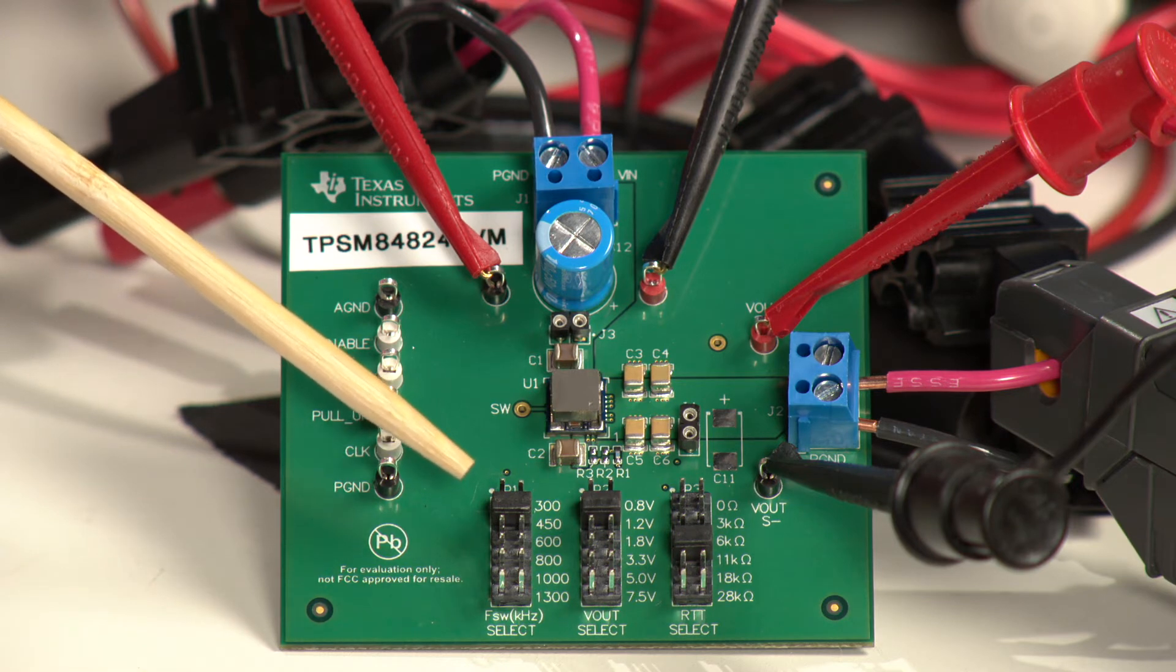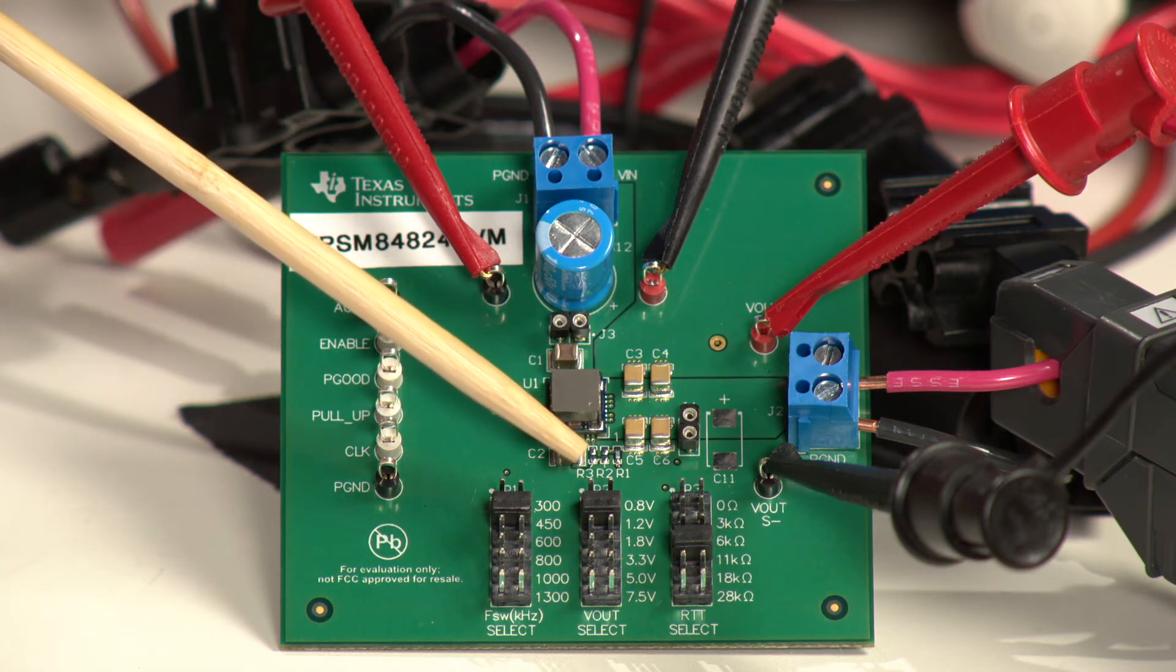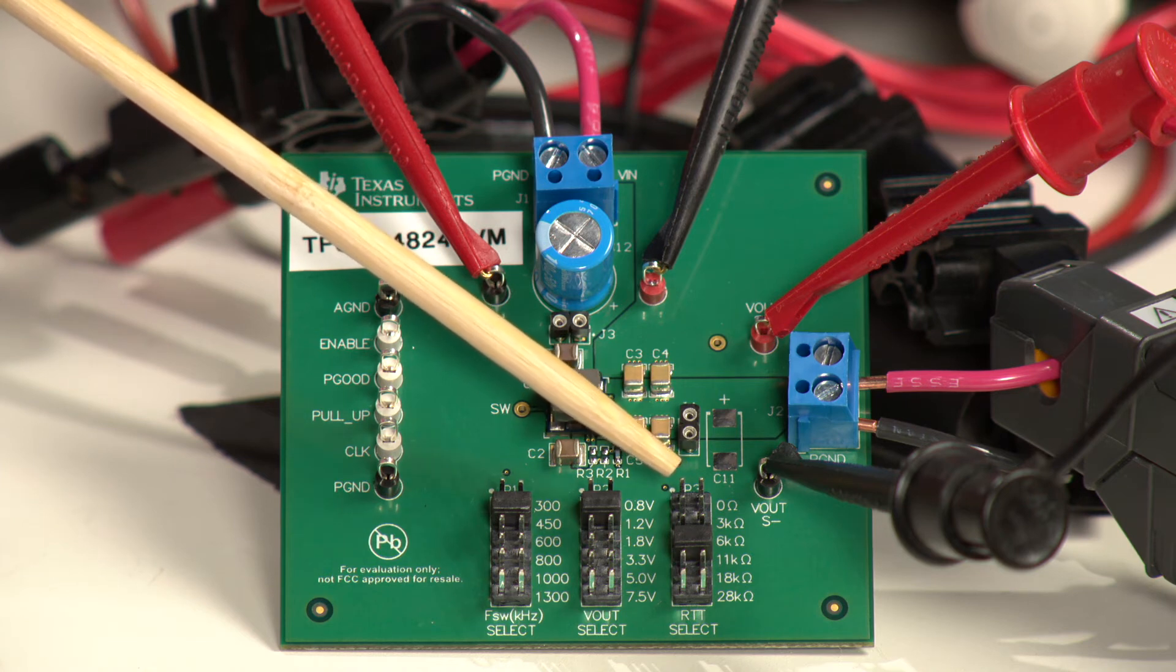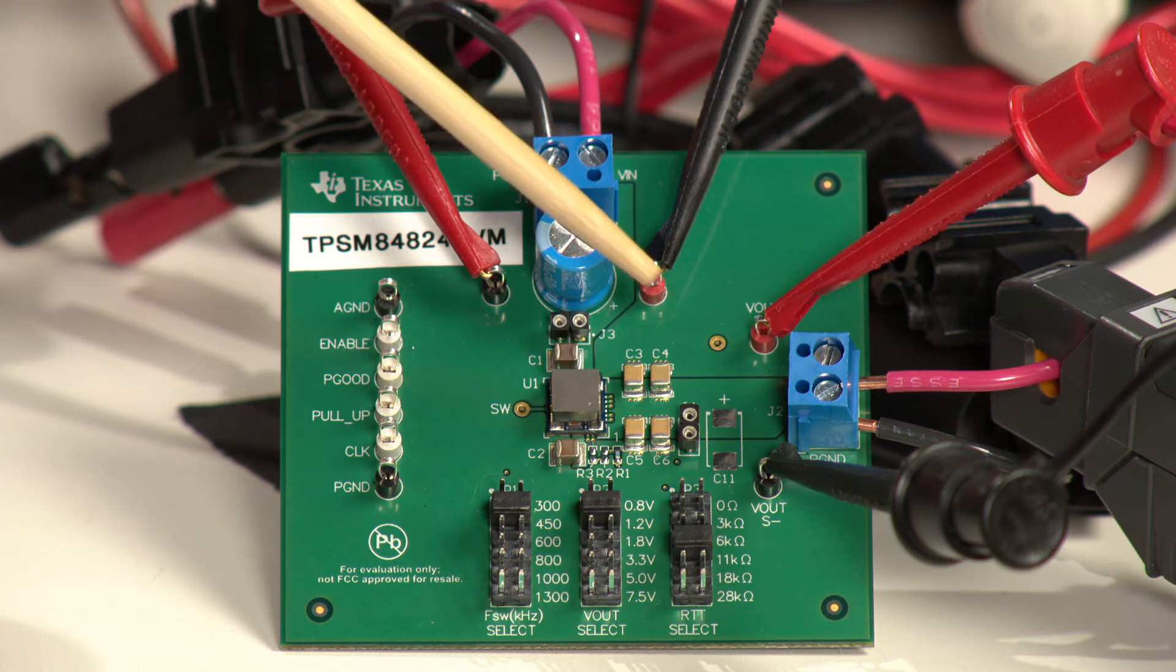There are jumper headers on the bottom of the board which allow selection of the switching frequency, the output voltage, and the turbo trans resistor which I will demonstrate in a little bit.